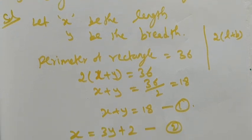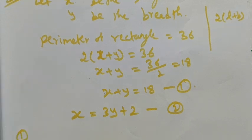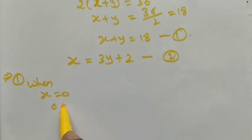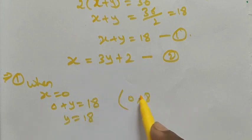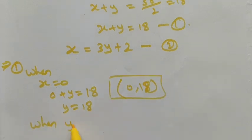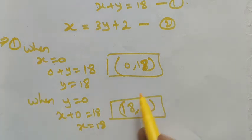By using these two equations with x and y, it is easy to identify the graph. For the first equation, when x = 0: 0 + y = 18, so y = 18. The ordered pair is (0, 18). When y = 0: x + 0 = 18, so x = 18. The ordered pair is (18, 0). These are the two ordered pairs for the first equation.